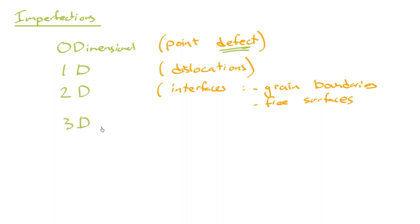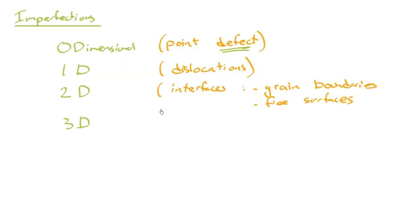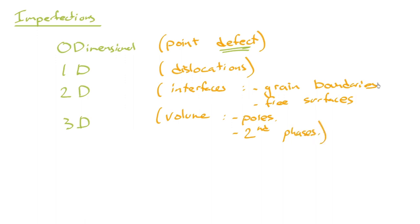Three-dimensional imperfections are essentially like a two-dimensional imperfection wrapped around something else — these are things that have volume. Some examples would be pores, which are usually bad but not necessarily always — these are like little bubbles in the material. Another example is second phases. Materials can often have different crystal structures in the solid state within them.